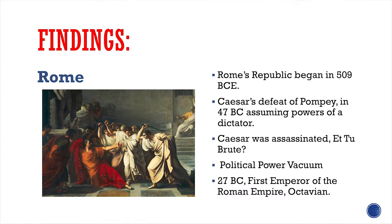After Caesar's assassination, an attempt to restore the republic led to a political vacuum. At one point, there were six different militaries at war in Rome, trying to take control. What ended up happening was that the first emperor of Rome came to power in 27 BCE — Augustus, or Octavian, who was Julius Caesar's nephew.